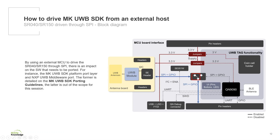Now for the second scenario, we are using the external host to drive the SR40 or SR150 through SPI. In this scenario, the QN1990 is disabled and the required signals are routed to the Arduino pin headers. Note that compared to the first scenario, there is an impact on the software to be ported — for instance, the MK UltraWideBand SDK platform port layer and the NXP UltraWideBand middleware port. You can refer to the MK UltraWideBand SDK porting guidelines document that is delivered with the MK UltraWideBand Git repository for a detailed guide of the APIs that need to be ported and the structure of the project. The document is limited to the MK UltraWideBand SDK platform layer.